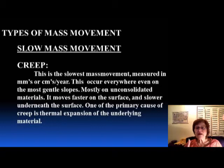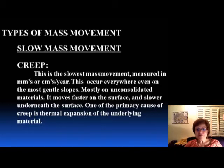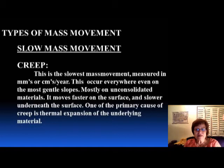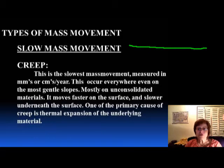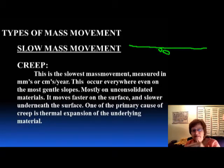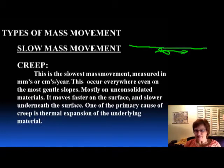The first type of slow mass movement is the creep. It's a funky name, I know you're laughing. Creep is the slowest mass movement. It is measured in millimeters or centimeters per year. And this will occur even on a very gentle slope — basically one degree, which means it's basically flat.